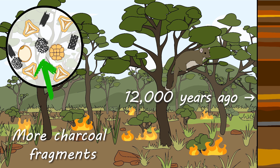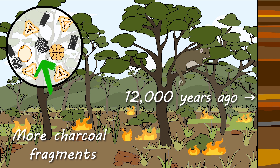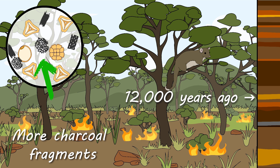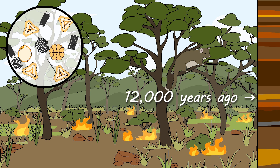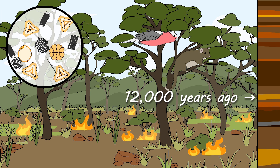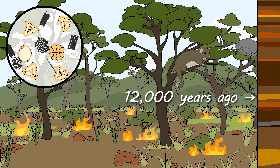Scientists interpret this as evidence that Aboriginal communities were deliberately burning the vegetation to keep the bushland open, part of a process of managing country.